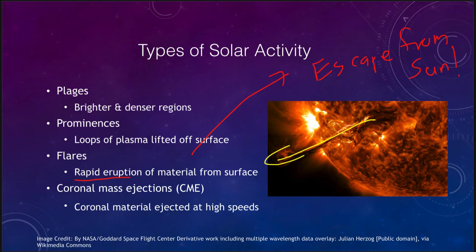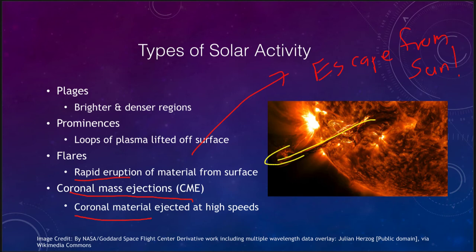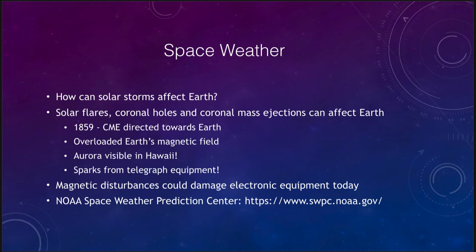Another type of event is what we call a coronal mass ejection, or CME — this is when large flares cause material in the corona to be ejected at high speed, producing even higher concentrations of particles. Most of them stream out harmlessly into space without affecting anything, however some of them could stream towards the Earth. So we want to look at how these storms can affect our planet.